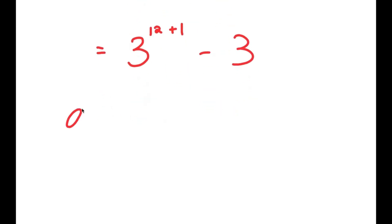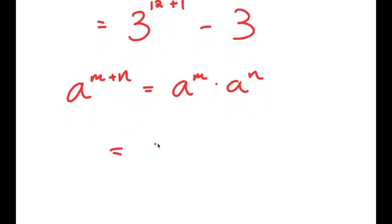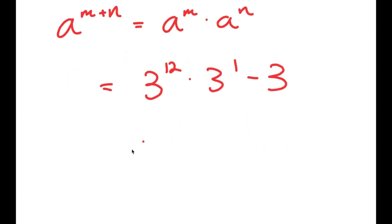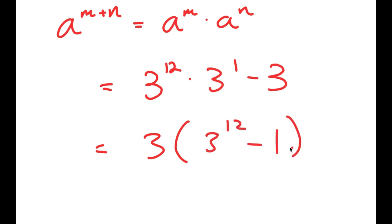Now if I have something in the form a to the power of m plus n, this is equal to a to the power of m times a to the power of n. So I get 3 to the power of 12 times 3 to the power of 1 minus 3. And from here, I can factor out 3, so I get 3 times 3 to the power of 12 minus 1.